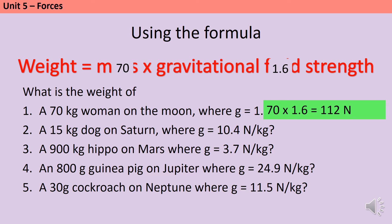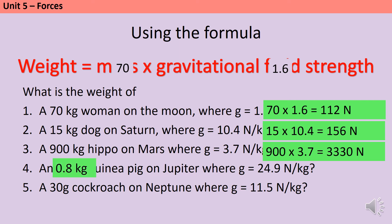So, in question 2, we do 15 kilograms multiplied by 10.4 to get an answer of 156 newtons. Then, for question 3, we get an answer of 3,330 newtons. For question 4, I needed to spot that my guinea pig had its mass given in grams, not kilograms. There are 1,000 grams in a kilogram, so I'm expecting the mass of my guinea pig to be slightly less than 1 kilogram. The way that I get there is by dividing by 1,000. 800 divided by 1,000 is 0.8 kilograms, and that means that my guinea pig has a weight of 19.92 newtons. Similarly, my cockroach has a mass of 0.03 kilograms, and therefore a weight of 0.345 newtons.